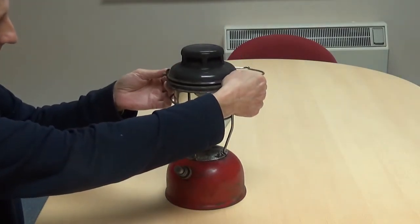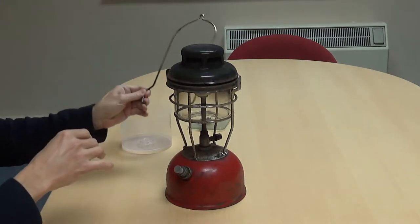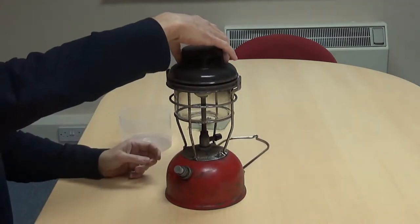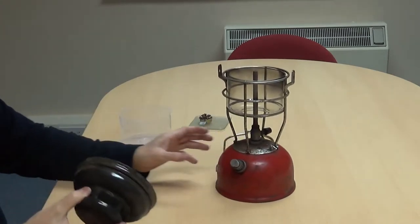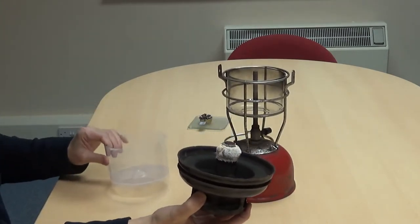This is the Tilly lamp. These come straight out. And the mantle itself is not attached to the bottom of the lamp, it's attached to there.